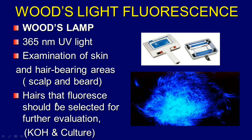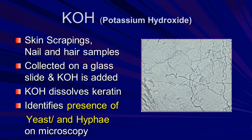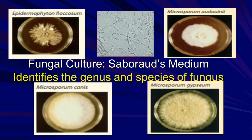This is the picture of Wood's lamp fluorescence. The 360 nanometer UV light — that is the Wood's lamp. We also use KOH, that is potassium hydroxide. The presence of the Eastern type on microscopy identifies the Nielsen-Harson sample from the KOH preparation. This is the picture of Sabouraud medium, which can differentiate fungal species.